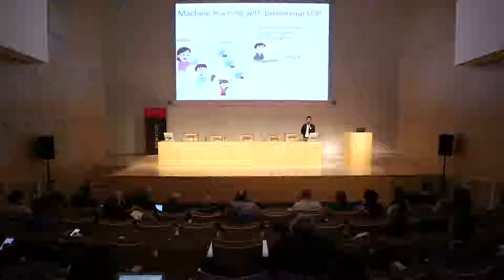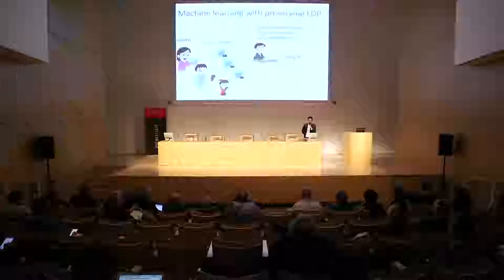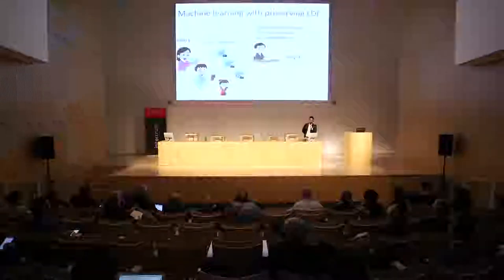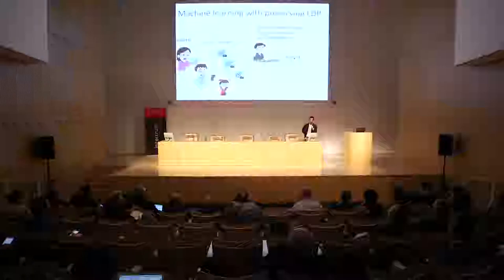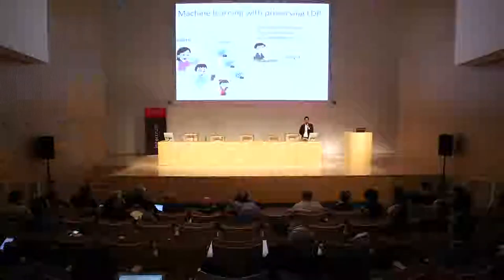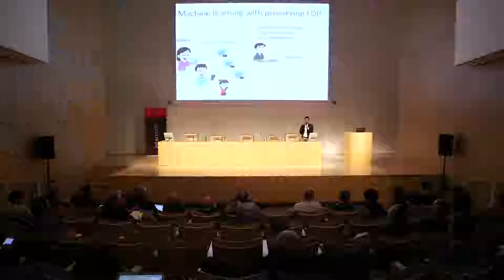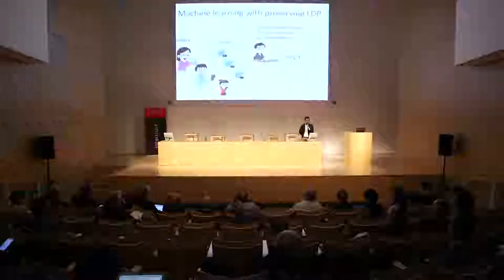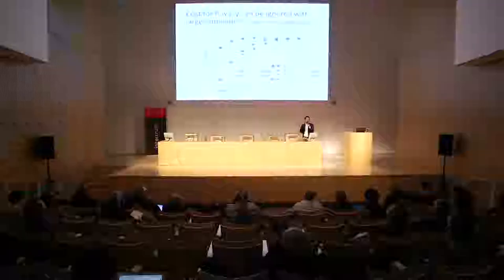In this scenario, users can send their text messages through local differential privacy. What the analyst sees is randomized text messages. But as long as the analyst can collect information from a sufficiently large population, the analyst can statistically obtain a correct machine learning model using statistical estimation.